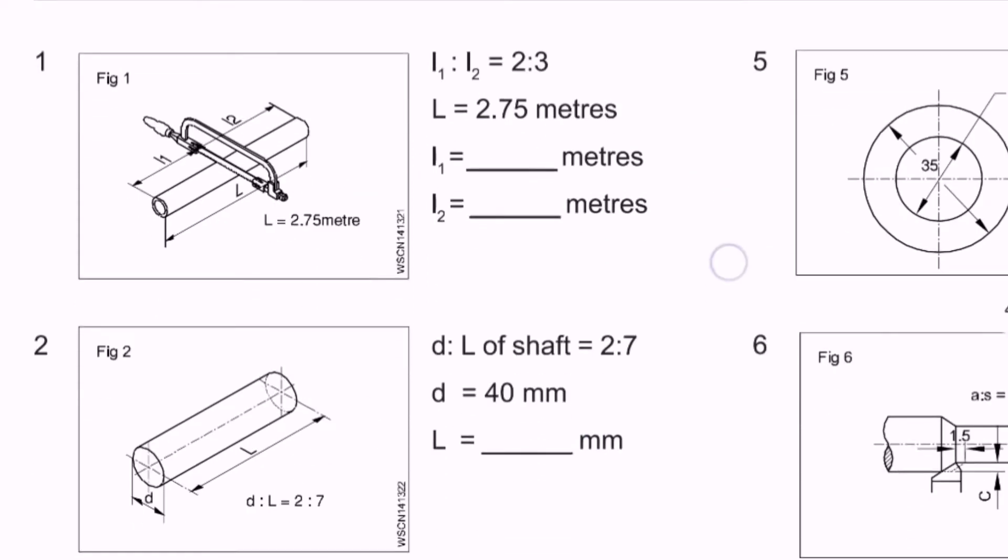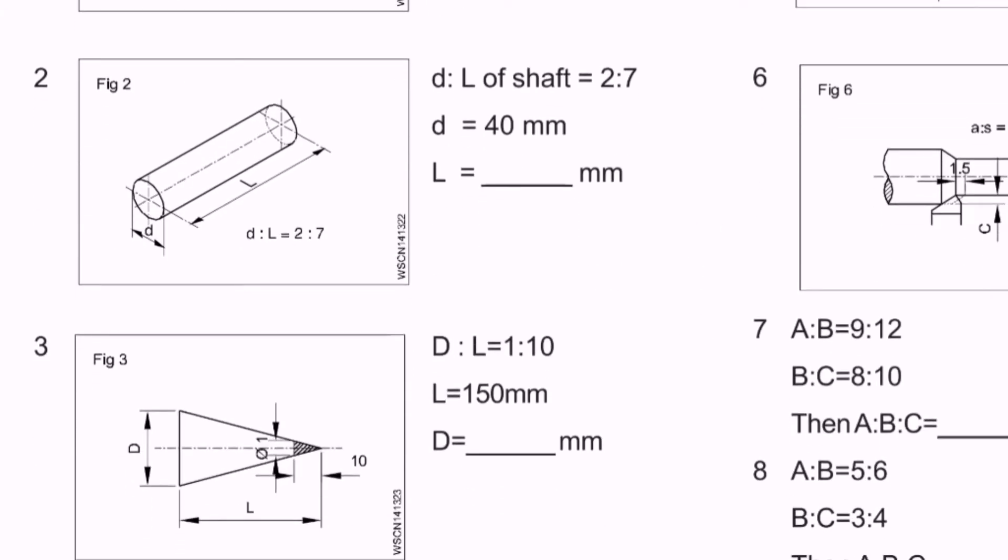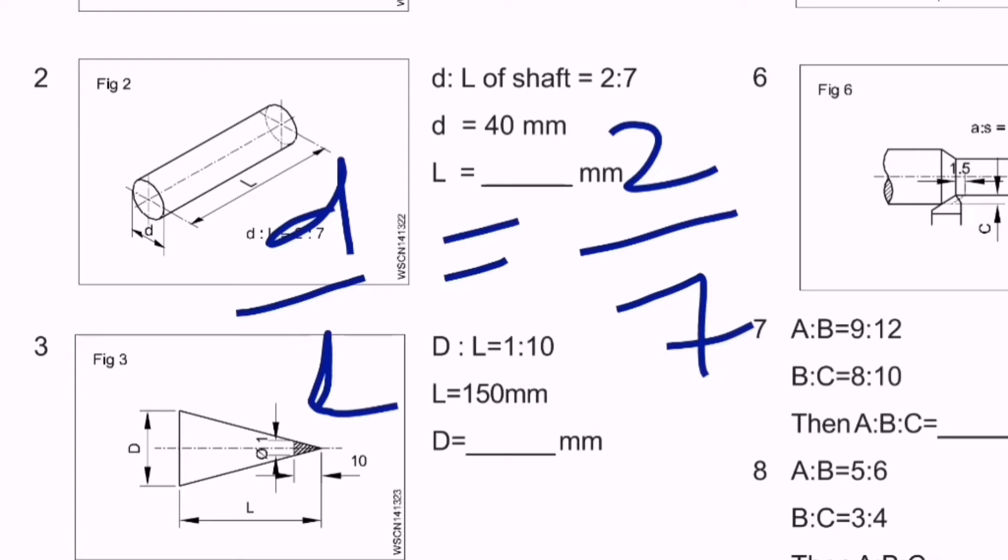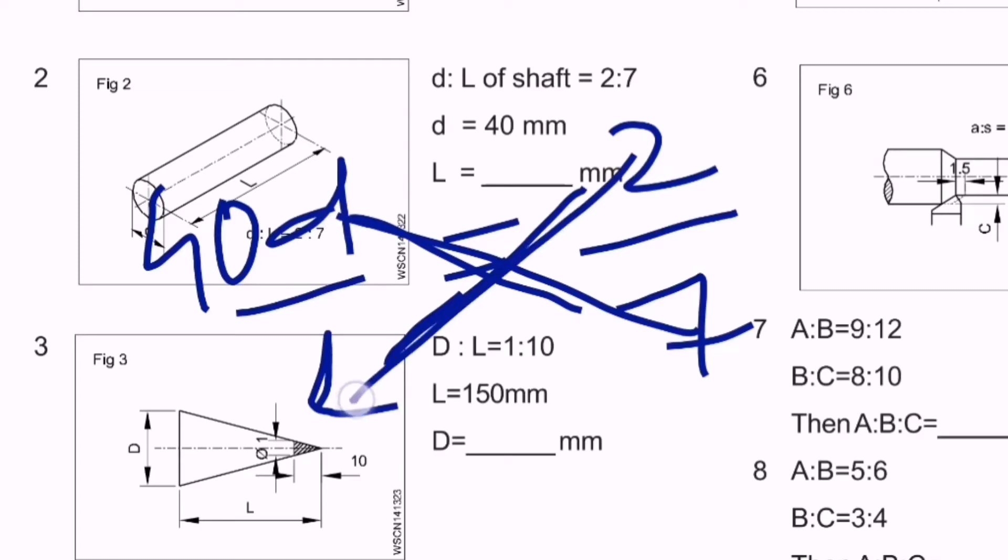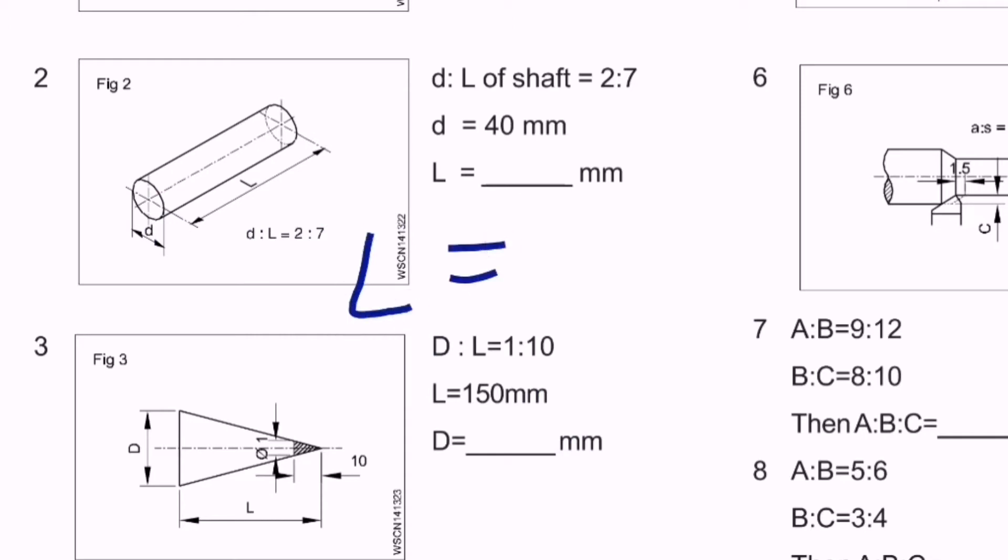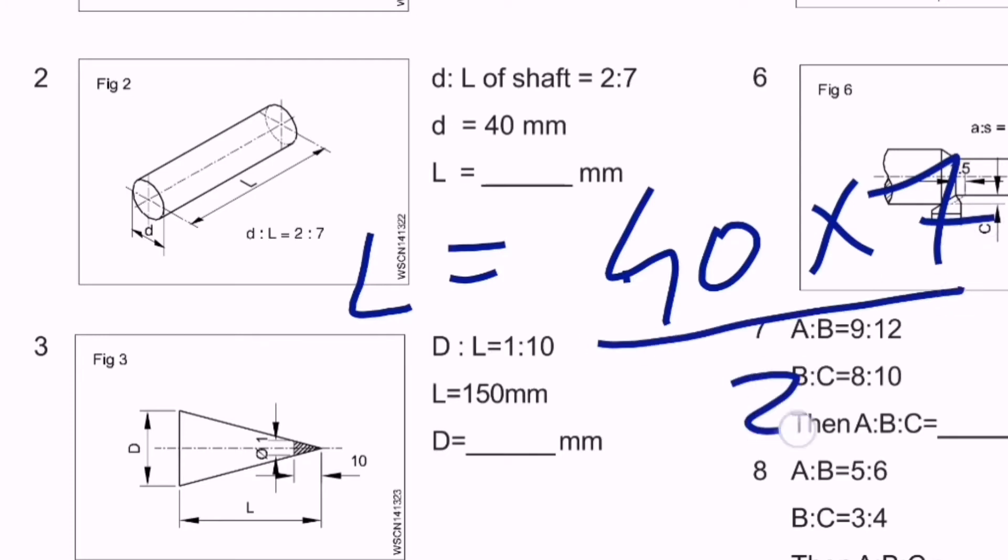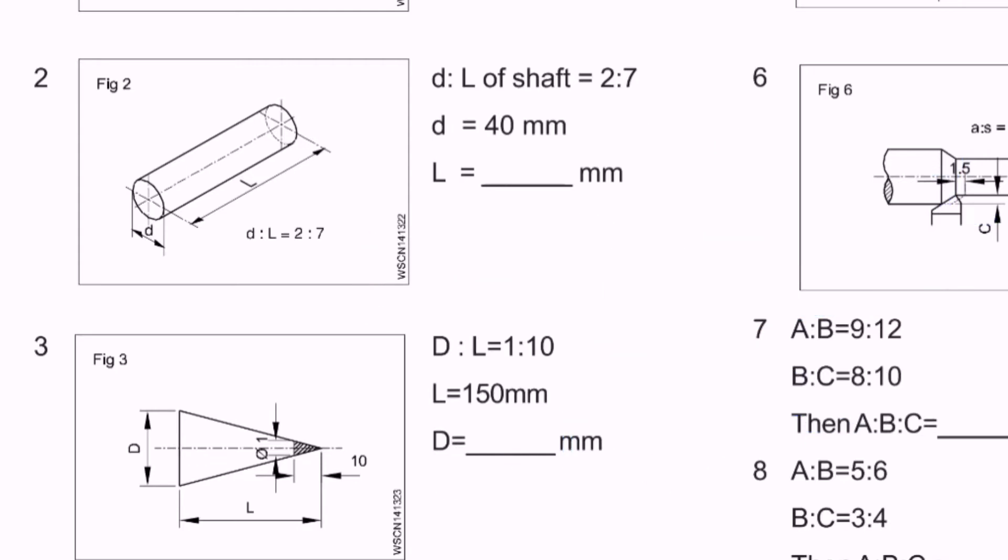Second question: there is a cylindrical job where diameter and length ratio is 2:7. The diameter is 40mm, so we need to find the length. d/L equals 2/7. Cross multiplication: diameter is 40, so 40 times 7 divided by 2 equals 140mm. The length of the cylindrical job is 140mm.